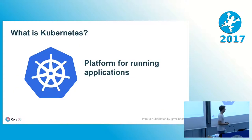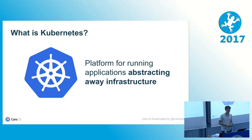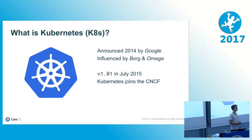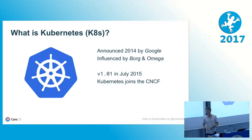A little bit about Kubernetes. We've already had our number one sentence: it's a platform for running applications, abstracting away your infrastructure. A little bit of history — where does Kubernetes actually come from? It comes from Google. It turns out Google has a lot of experience running containers — they've done that for many years. A lot of the main technologies in the Linux kernel used to run containers, like cgroups, were contributed by Google.